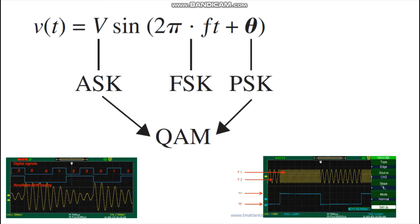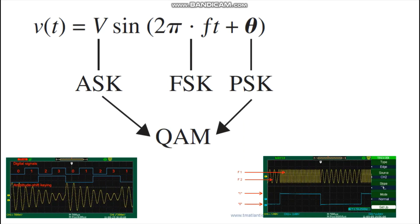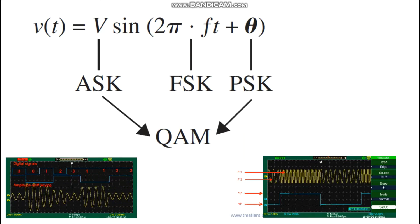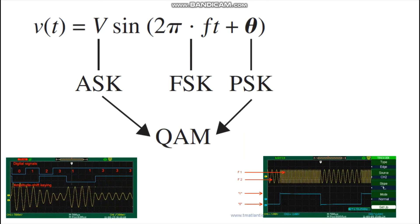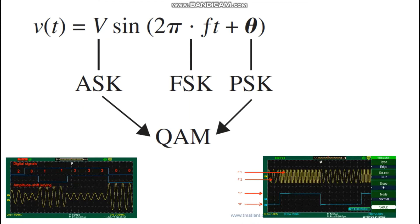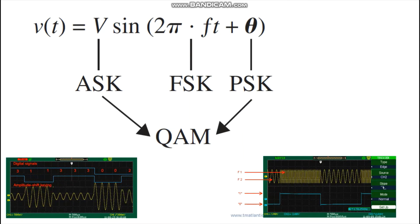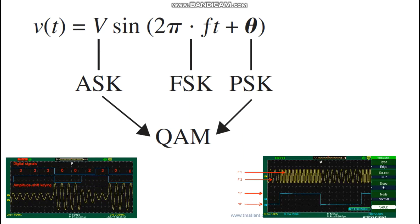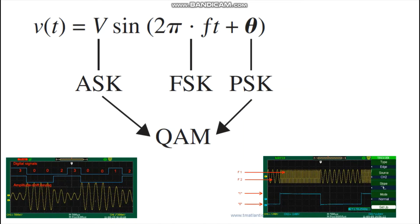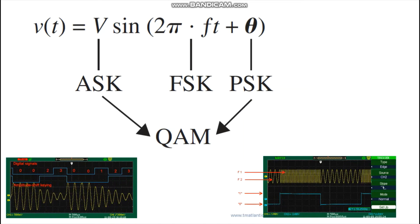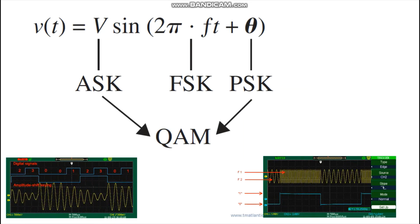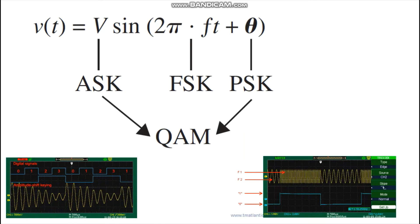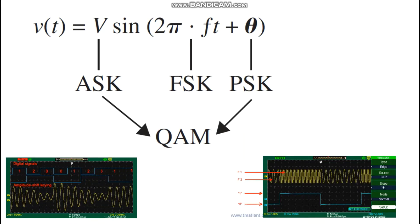If the frequency f is varied proportional to the information signal, that process is referred to as frequency shift keying, denoted FSK. And if the phase of the carrier, that is theta (θ), is varied proportional to the information signal, then that process is referred to as phase shift keying (PSK).